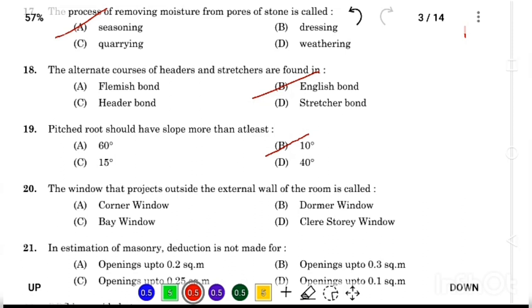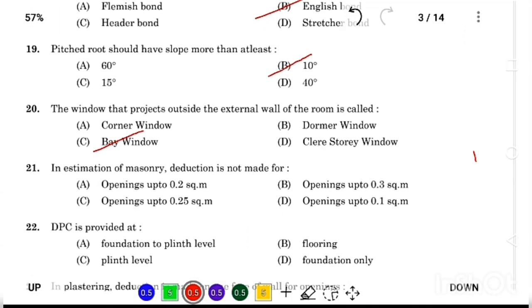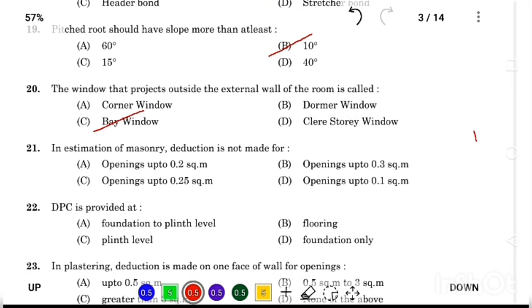The window that projects outside the external wall of the room is called Answer Option C, bay window. In estimation of masonry, deduction is not made for Answer Option D, opening up to 0.1 square meter.